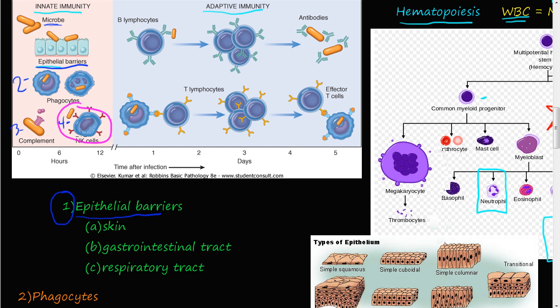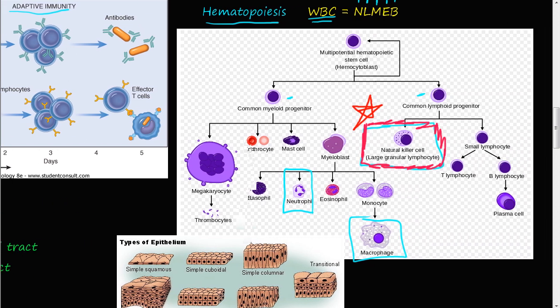And now in this video we are going to talk about these NK cells, these natural killer cells. Just a reminder that these natural killer cells are derived from this common lymphoid progenitor. Natural killer cells are a little bit bigger than the B and T lymphocytes, and they are also called large granular lymphocytes.